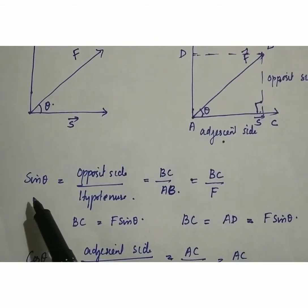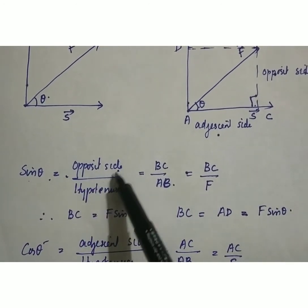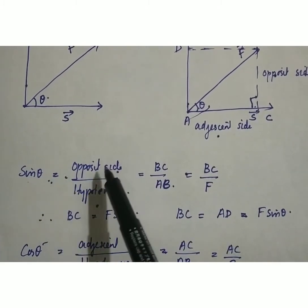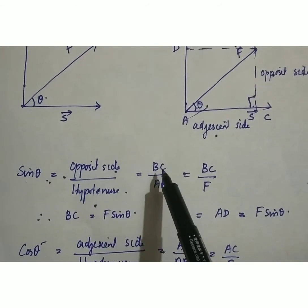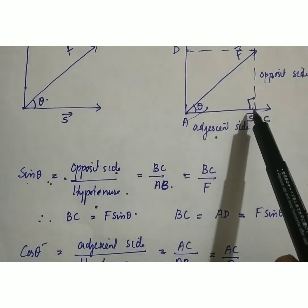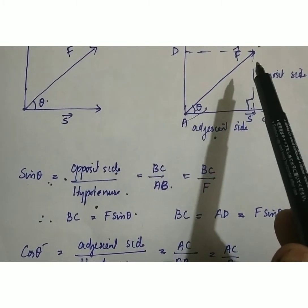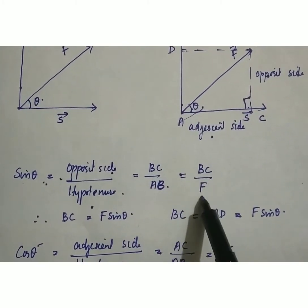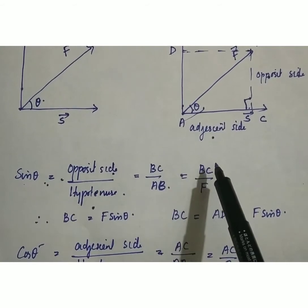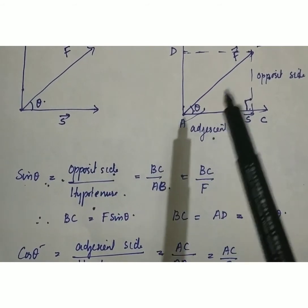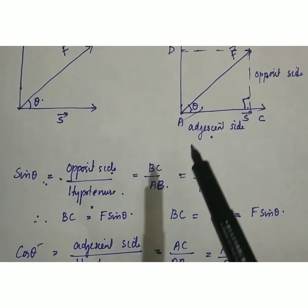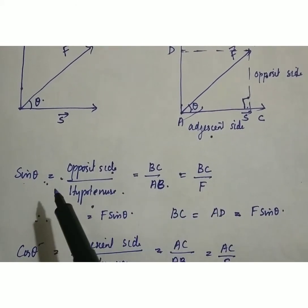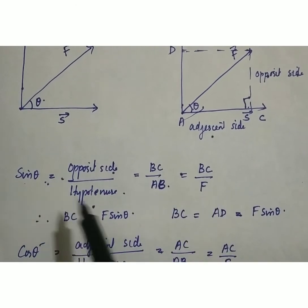In trigonometry, sin theta is equal to the ratio of opposite side by hypotenuse. Based on this angle, sin theta equals opposite side BZ divided by hypotenuse AB. Since AB represents force F, we can write sin theta equals BZ by F. Therefore, BZ is equal to F into sin theta.